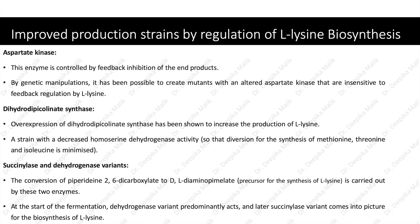The second enzyme is dihydrodipicolinate synthase. Overexpression of dihydrodipicolinate synthase has been shown to increase the production of L-lysine. A strain is produced with decreased homoserine dehydrogenase activity so that diversion for the synthesis of methionine, threonine, and isoleucine is minimized. The third enzyme involves the succinyl and dehydrogenase variants, which are involved in the conversion of piperidine-2,6-dicarboxylate to DL-diaminopimelate. At the start of fermentation, the dehydrogenase variant predominantly acts, and later the succinyl variant comes into picture for the biosynthesis of L-lysine.